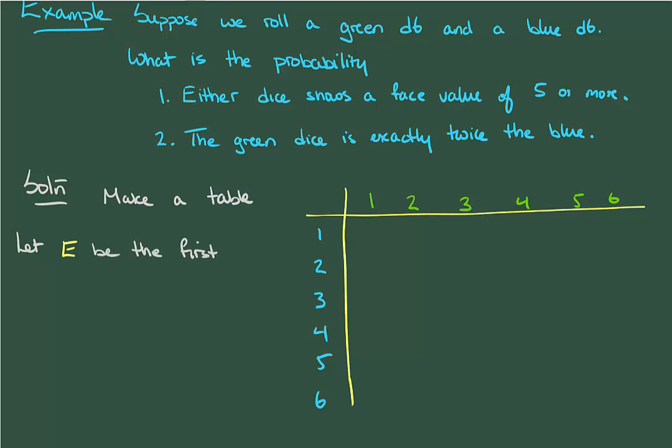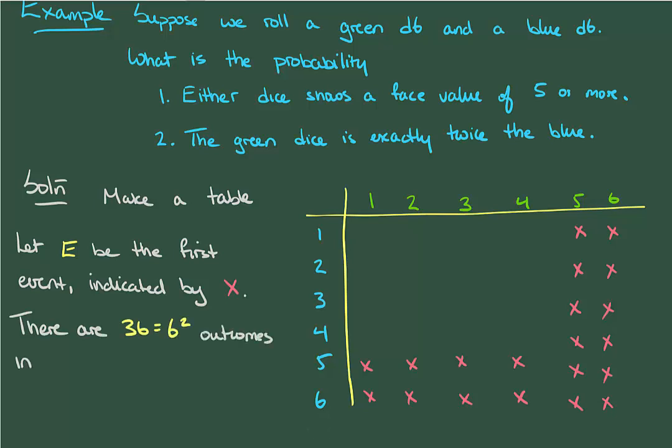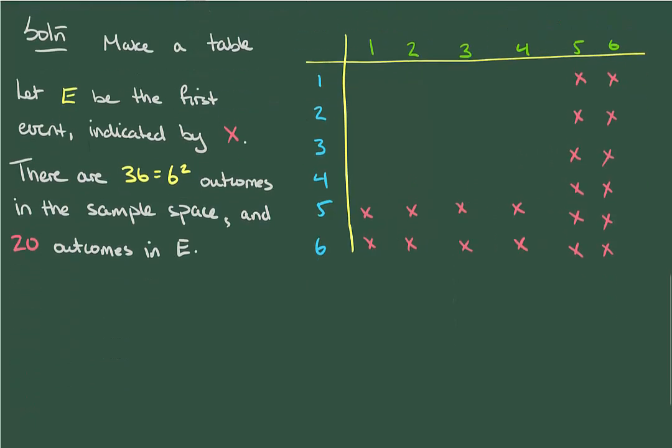Let E be the first event, and let's count how many elements there are in E. I'm going to mark these off in the table using a red X. I start when the green dice is 5 or more, and then I move over to the blue dice here. And okay, so we know there are 36 total possible outcomes, and that's just an application of the basic counting principle. And if we count the red X's, there are 20 possible outcomes in our event space.